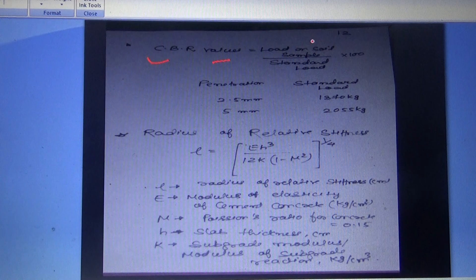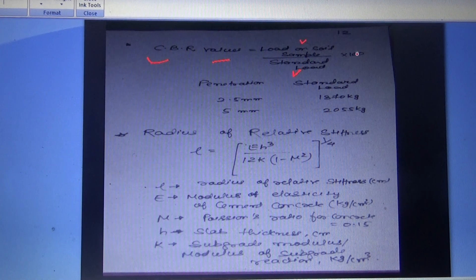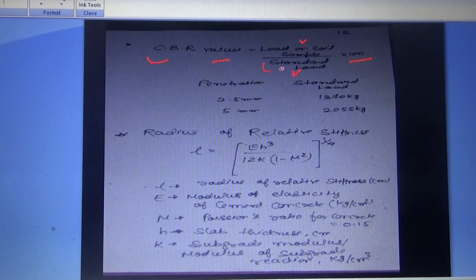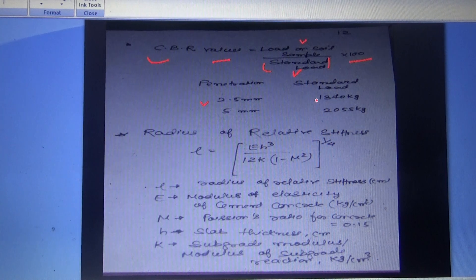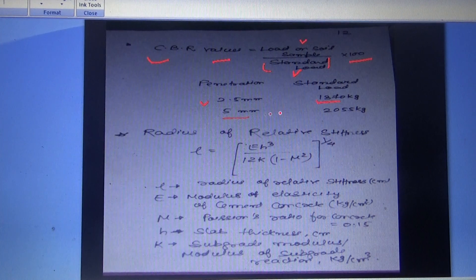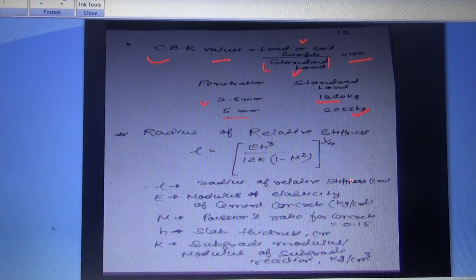CBR value = (load on soil sample / standard load) × 100. The standard load for 2.5 mm penetration is 1370 kg, and for 5 mm penetration is 2055 kg.